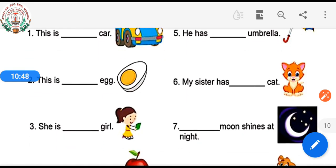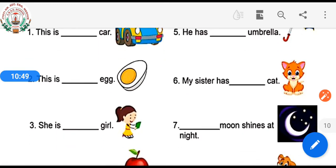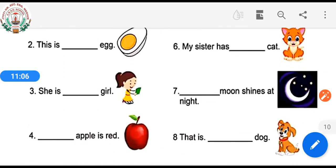Sixth one: My sister has dash cat. Seventh one: Dash moon shines at night. Eighth one: That is dash dog.